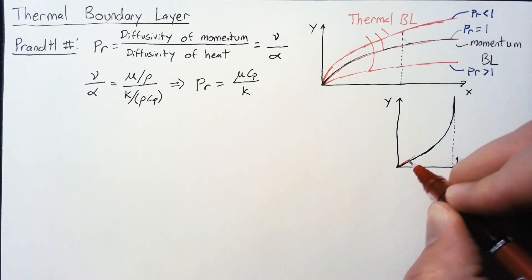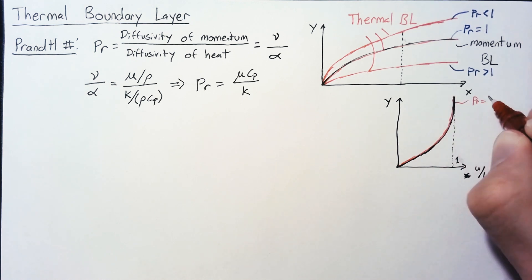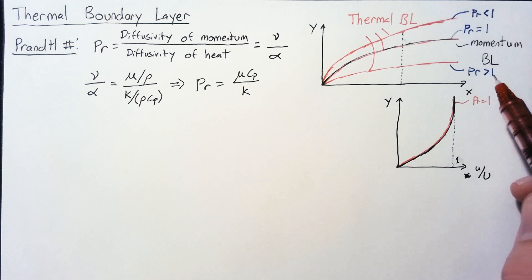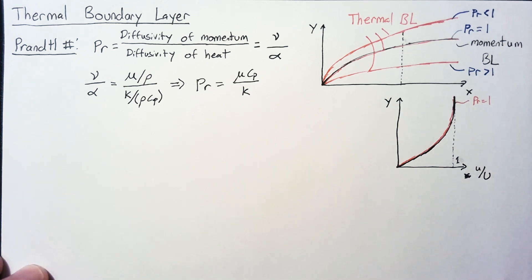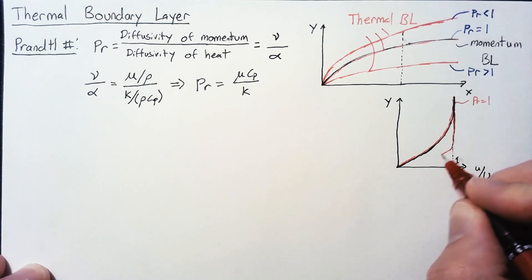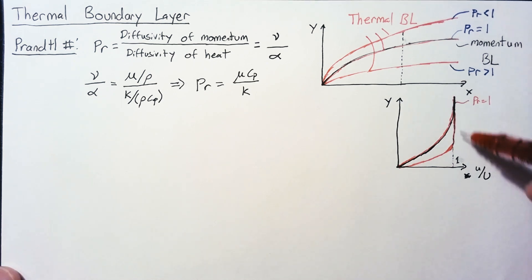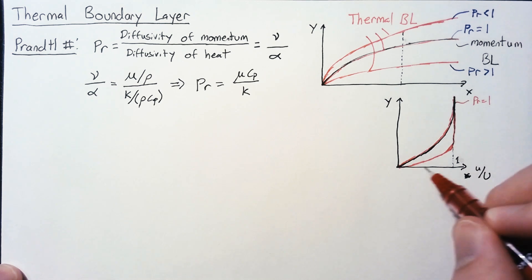For temperature, if our Prandtl number is equal to one, we're just going to line right on top of that. If our Prandtl number is greater than one, that means that heat hasn't had a chance to diffuse into the rest of the flow. We're going to stay stuck at the outside temperature for longer before we curve in towards the plate temperature.